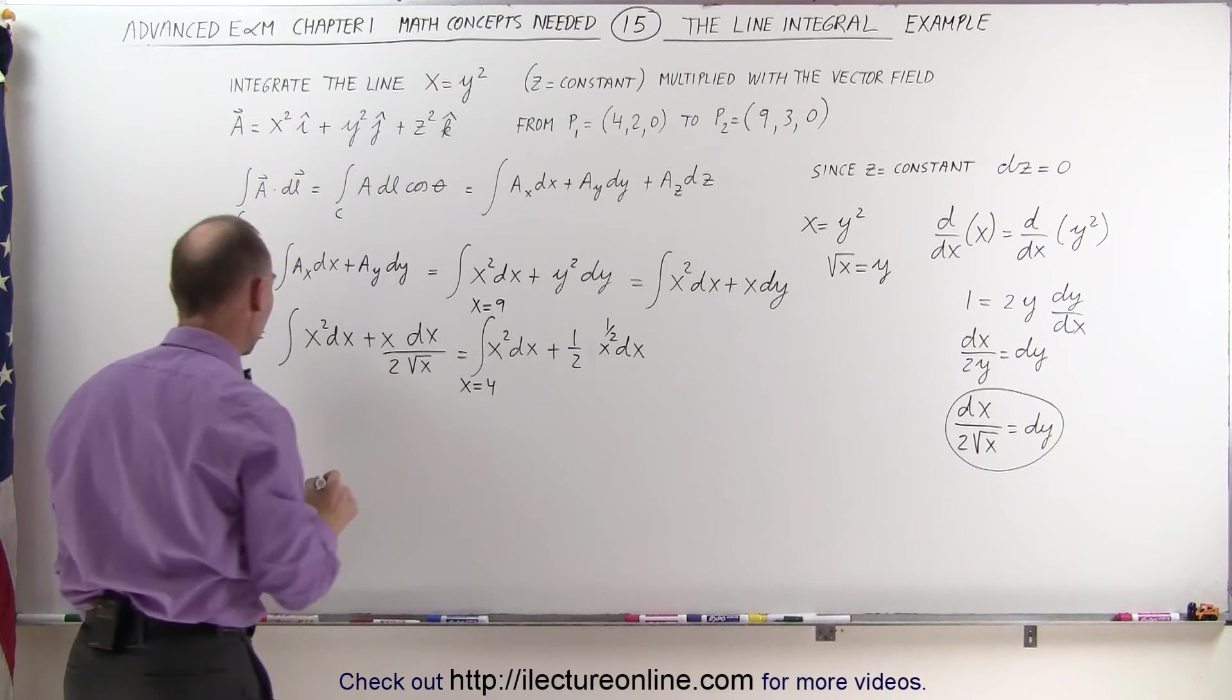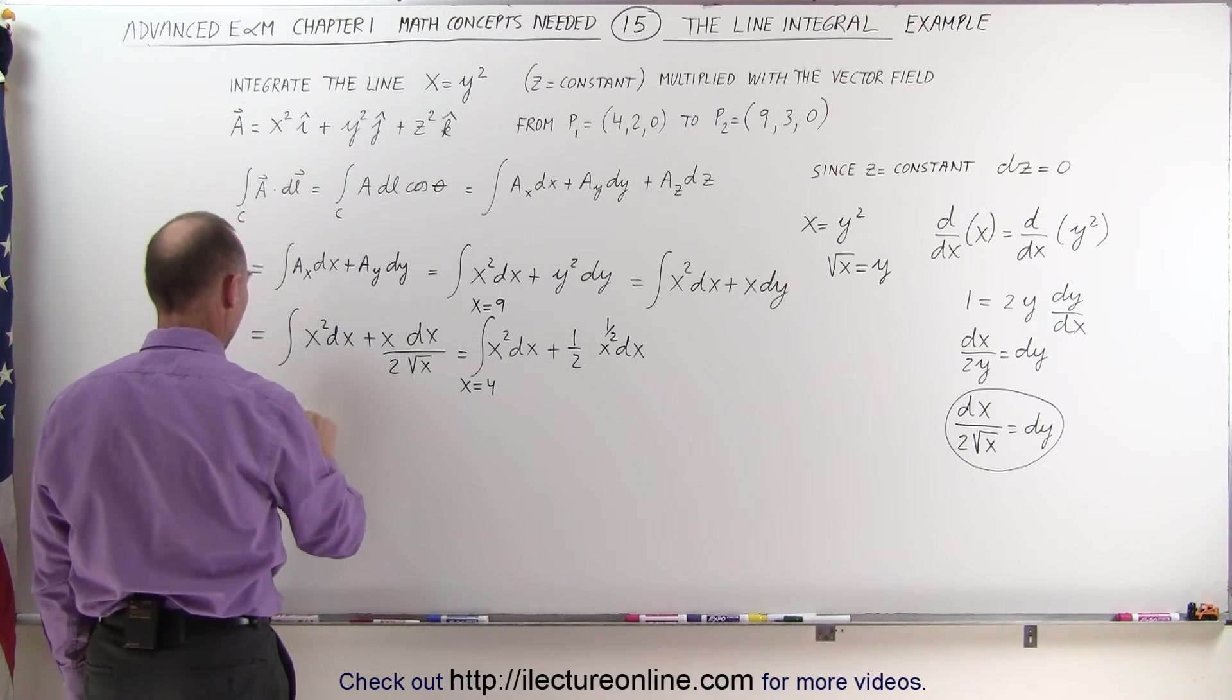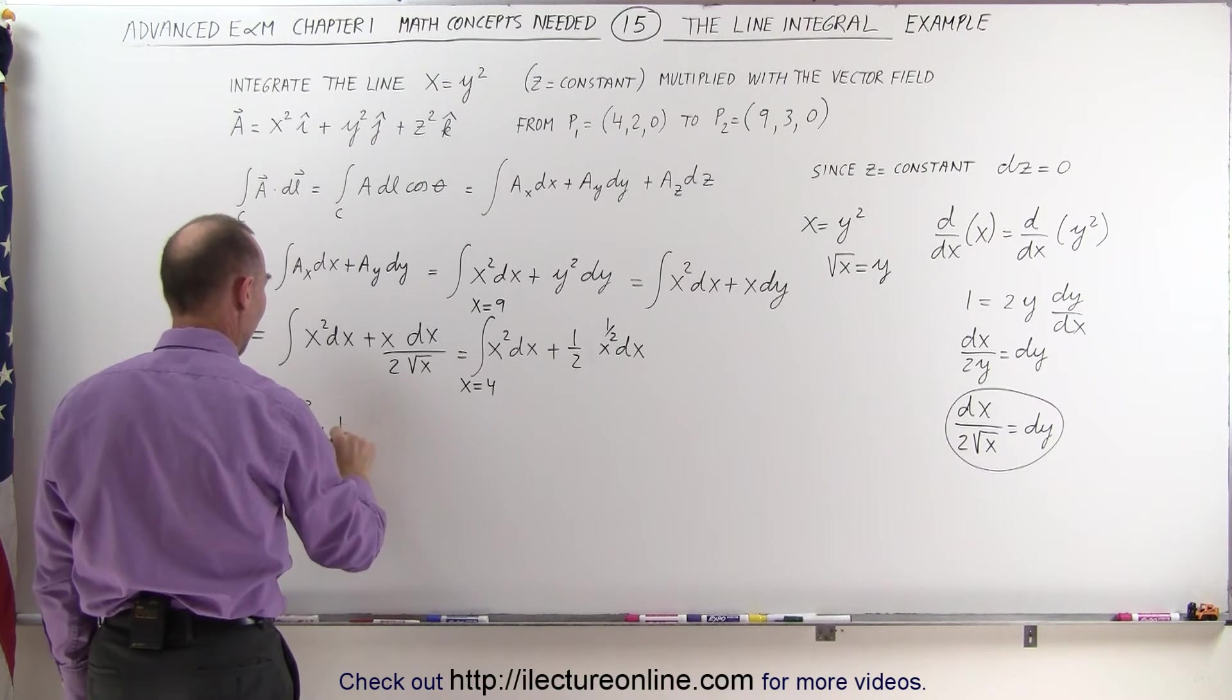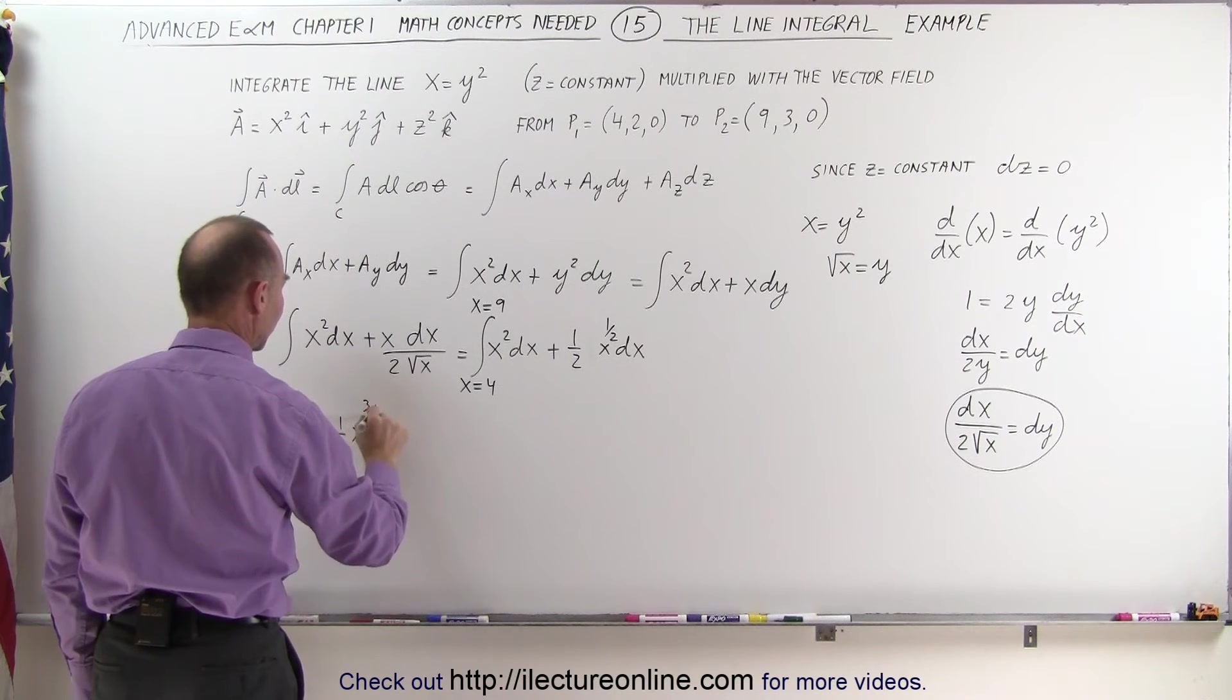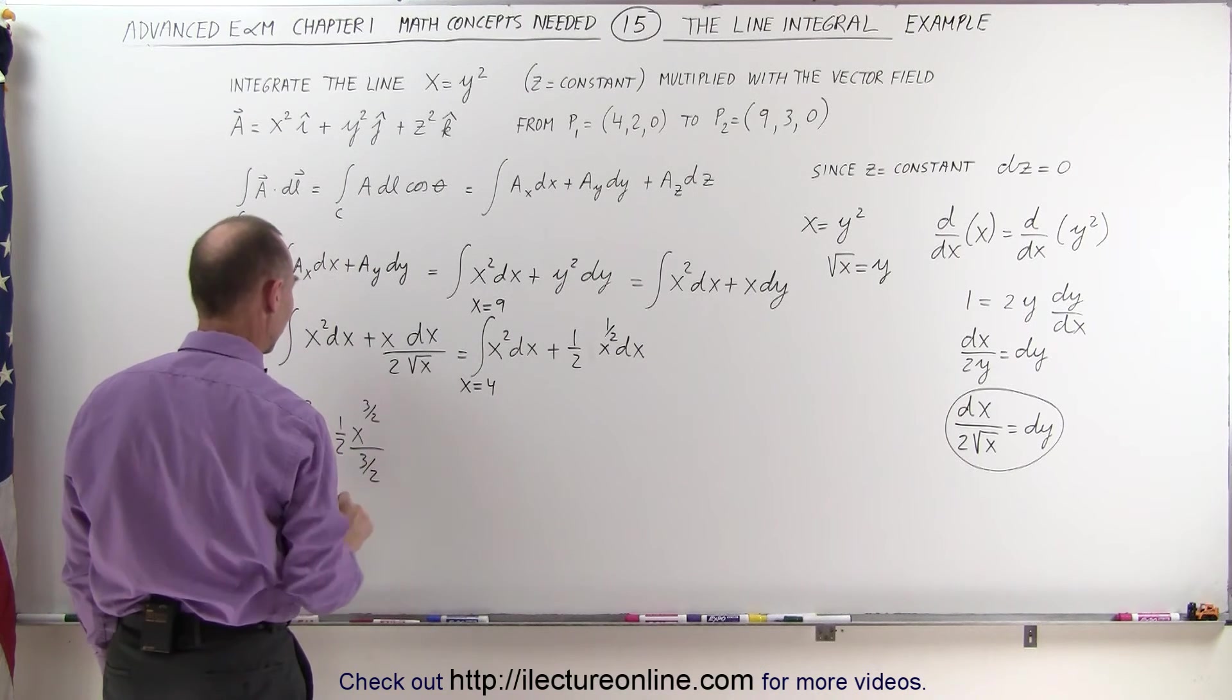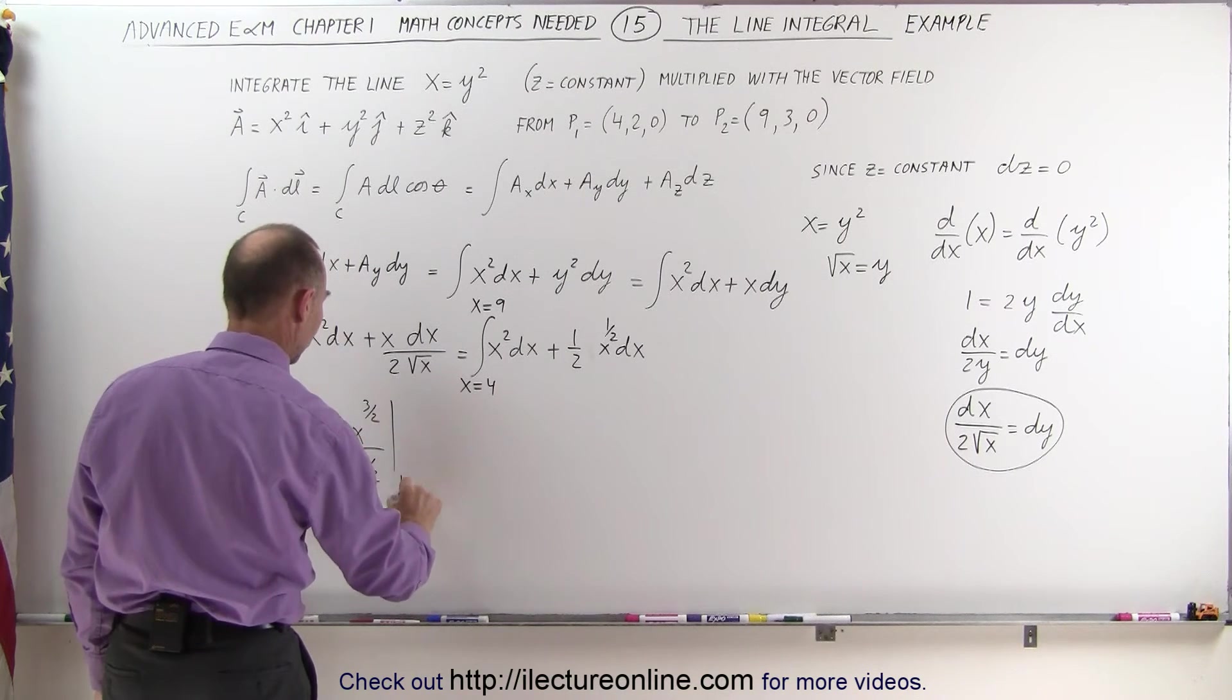Let's go ahead and do the integral now. Now this equals x cubed divided by 3 plus one-half times x to the three-halves divided by the new exponent three-halves, evaluated from 4 to 9.